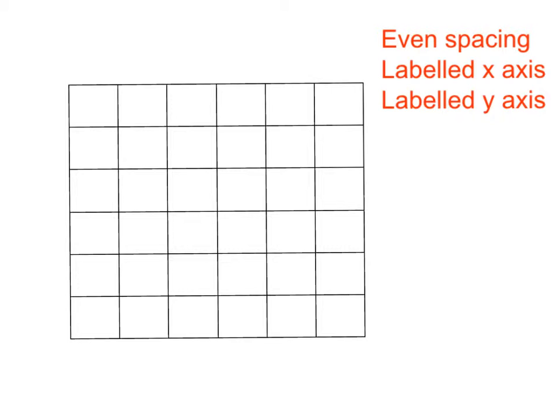So I could label it down here a, b, c, d, e, f. And remember my labels could also go up the top here. So I've done even spacing, tick, label the x-axis, tick.